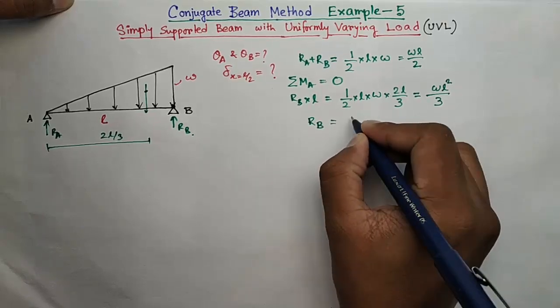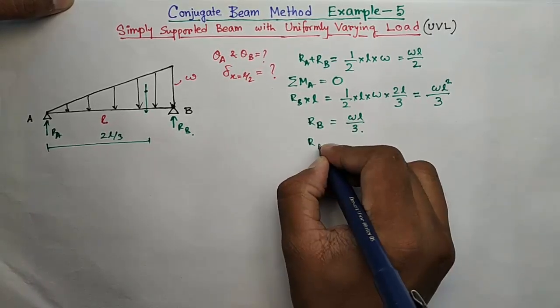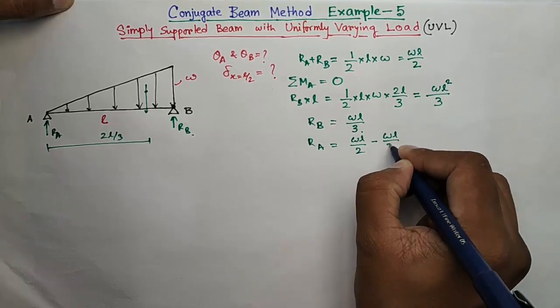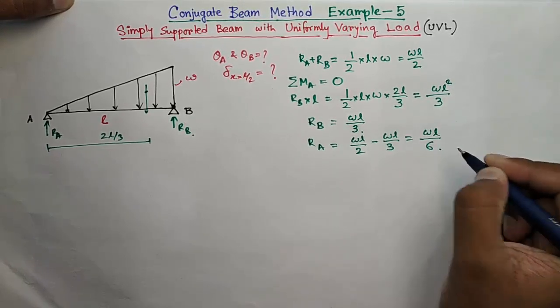So RB is equal to WL by 3, and RA is equal to WL by 6.